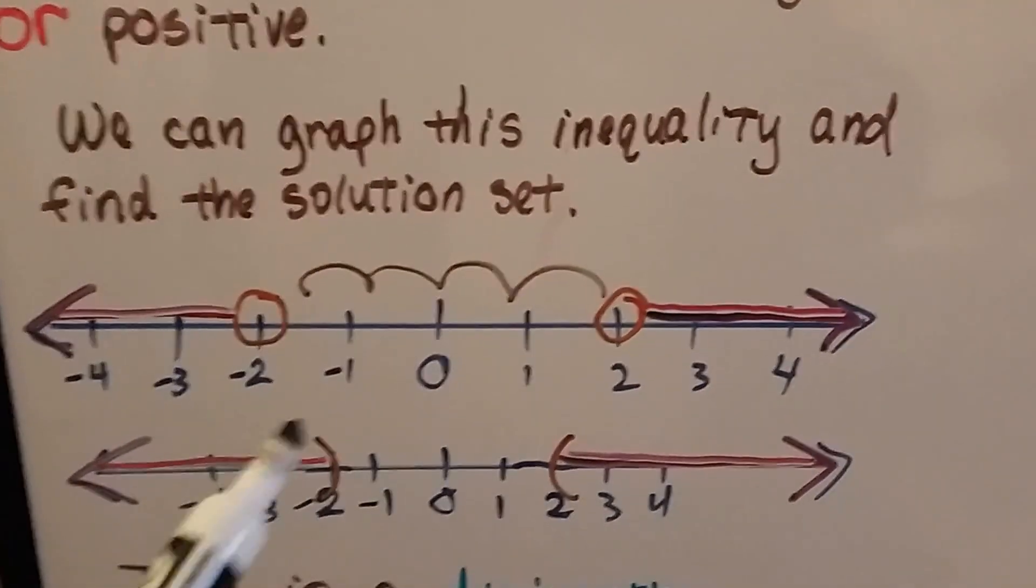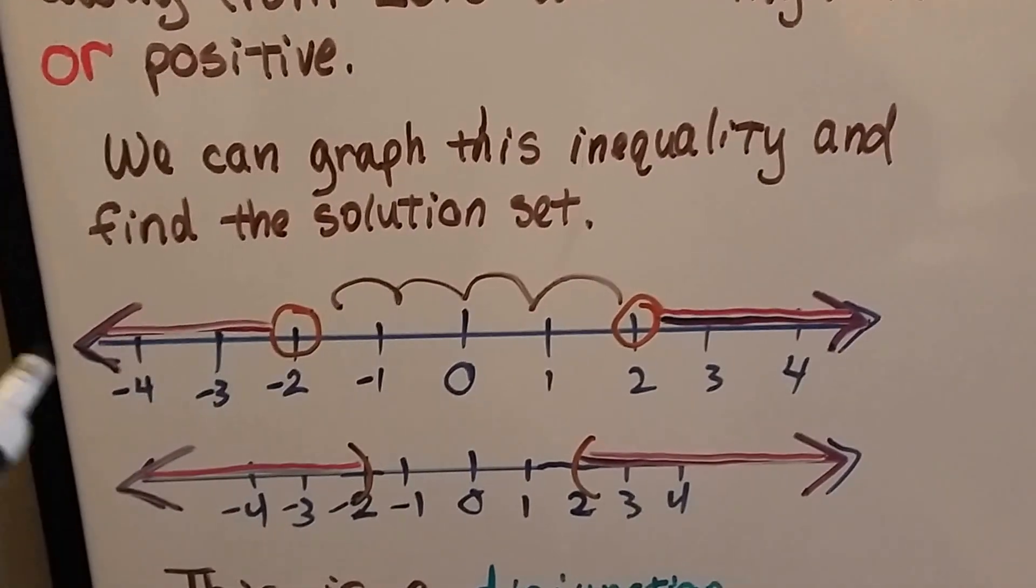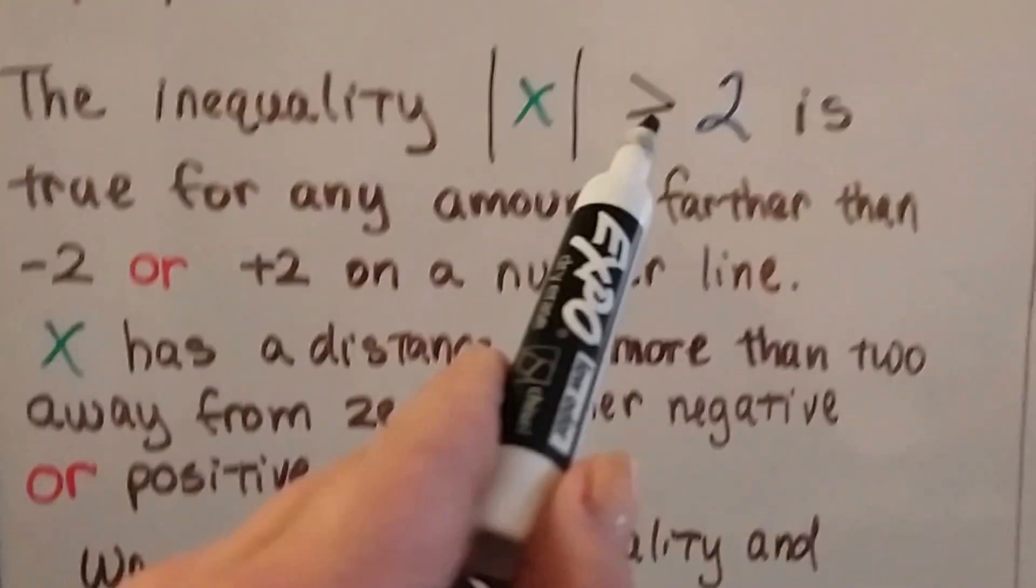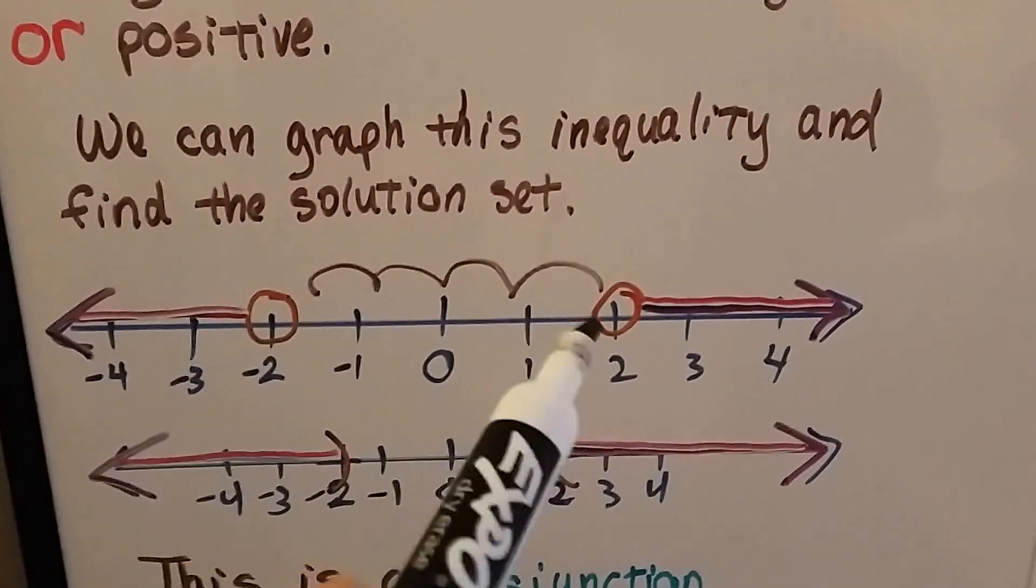So it's greater than 2 away from 0. We just need 2 hops away, and we know that it's greater than that number. It doesn't include negative 2 or positive 2. It doesn't have the or equal, it's just greater than that distance.